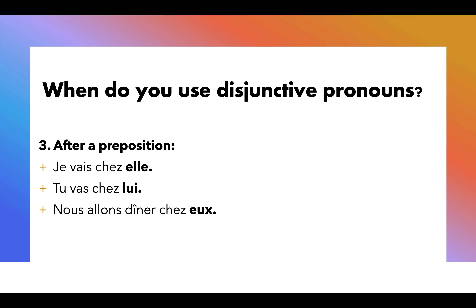The third instance in which we use disjunctive pronouns is after a preposition. Let's look at this wonderful preposition: chez. You guys are used to chez elle, chez moi, chez lui — you've heard that before. Chez toi, chez moi. This is where it comes from. After a preposition, we use a disjunctive pronoun. And chez is that fantastic preposition in French that means at the house of, or at the place of.